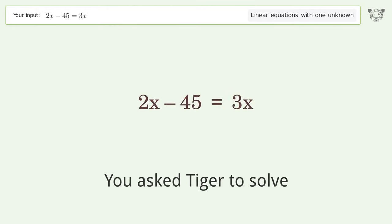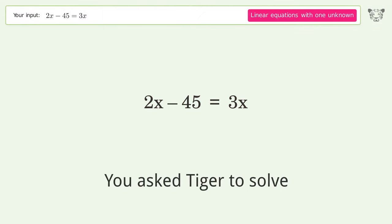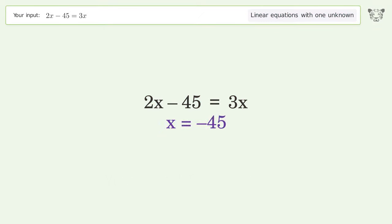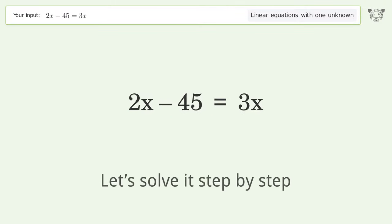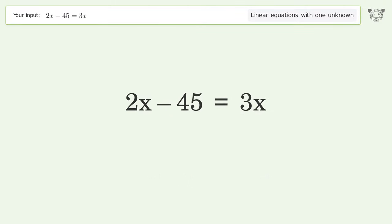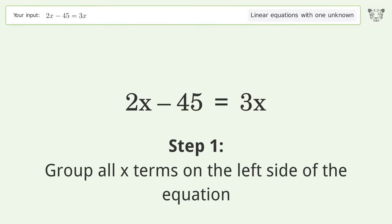You asked Tiger to solve this. This deals with linear equations with one unknown. The final result is x equals negative 45. Let's solve it step by step. Group all x terms on the left side of the equation.